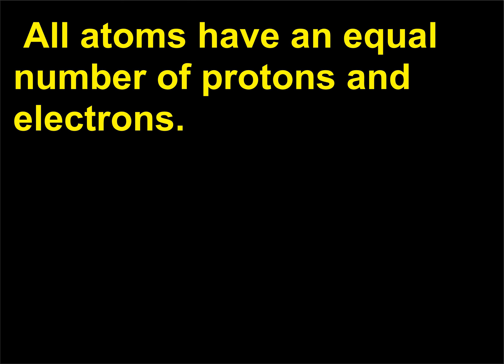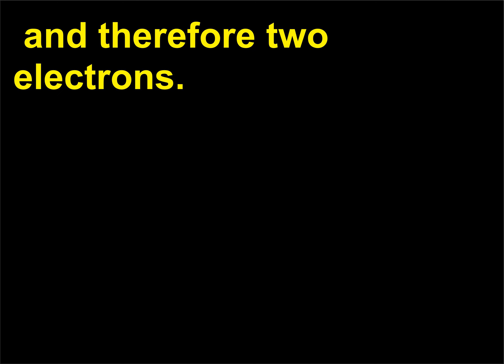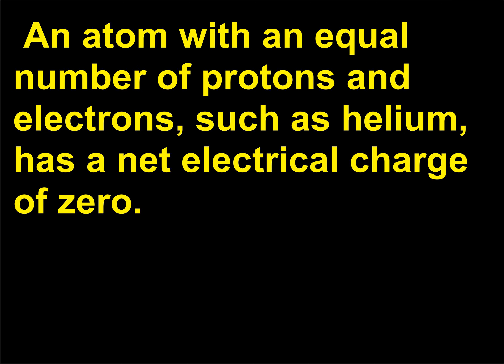All atoms have an equal number of protons and electrons. For example, an atom of helium has an atomic number of two because it has two protons and therefore two electrons. An atom with an equal number of protons and electrons, such as helium, has a net electrical charge of zero.